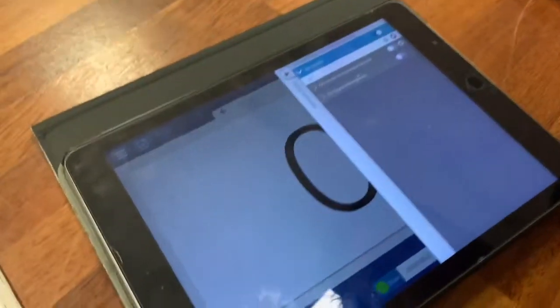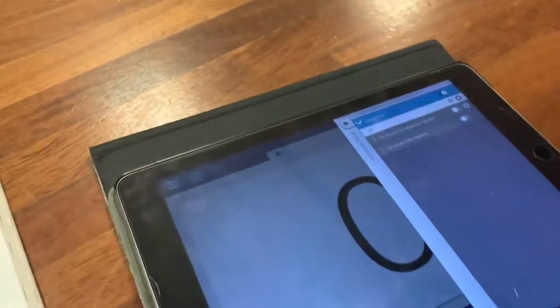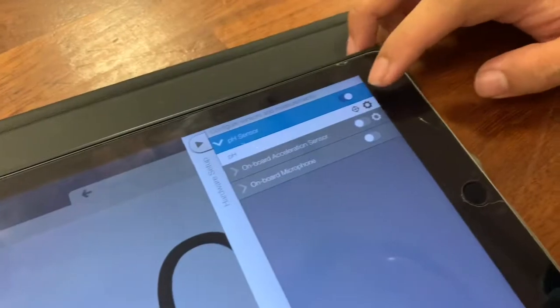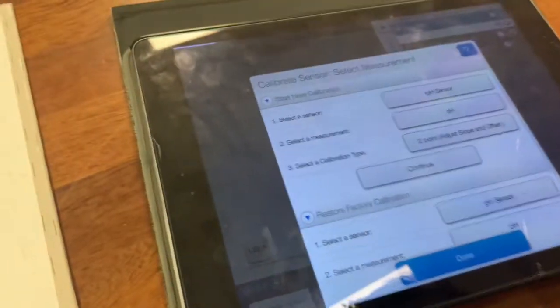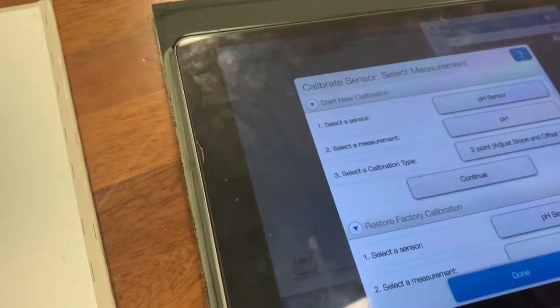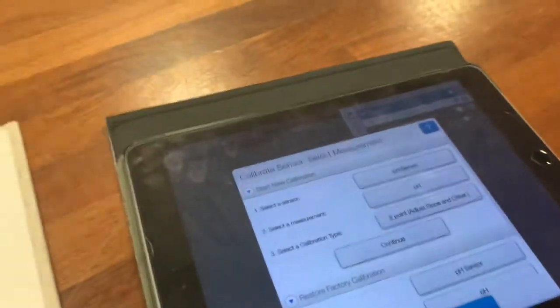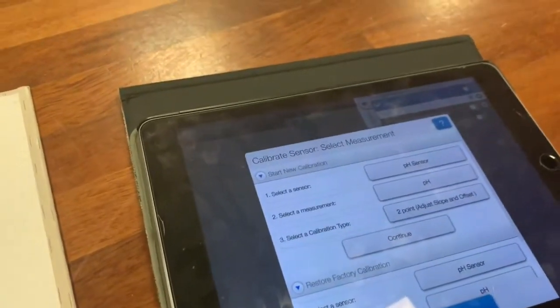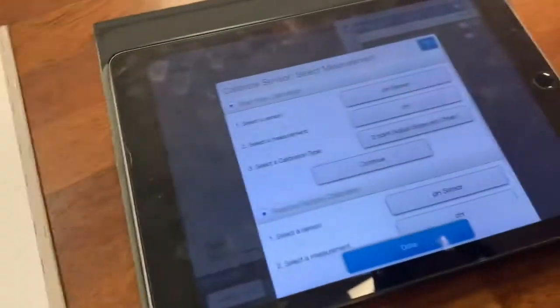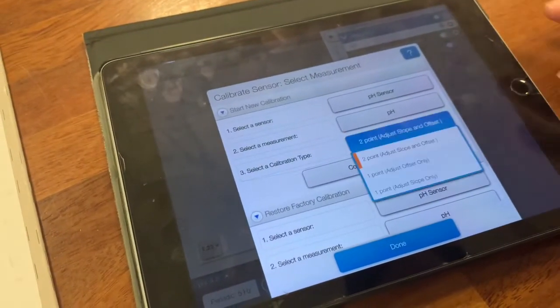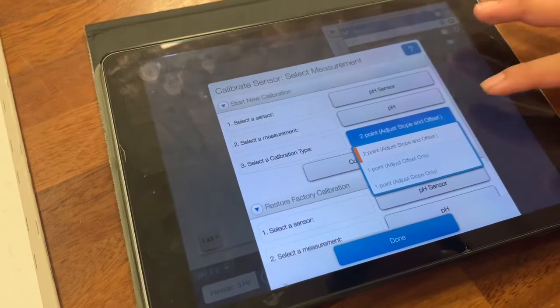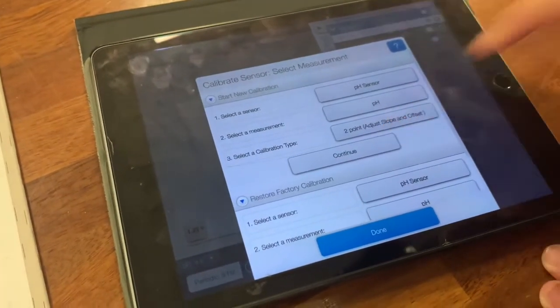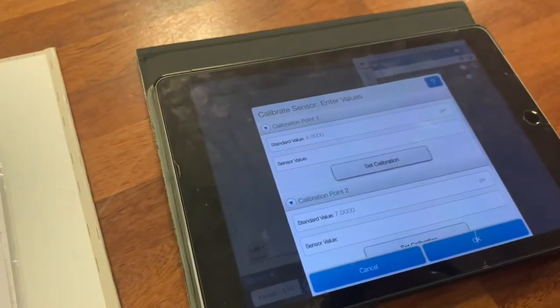And it says up there that we're going to hit then the target beside pH. See the target? And then we're going to calibrate it. So see where it says two point adjust slope and offset? Everyone following along with this? Hit two point adjust and offset. That's okay, just checking. And then hit continue.